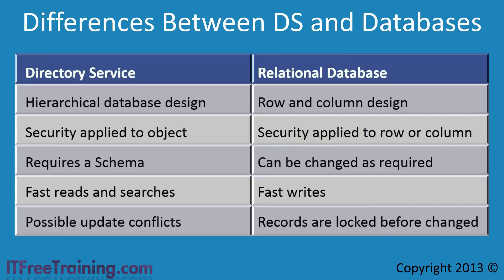The next difference is that a directory service is based on a schema. If you want to add additional object types to the directory service, you need to make changes to the schema. A database does not require a schema, so changes to a database can be removed later. Changes to the schema of a directory service, on the other hand, cannot be deleted later on if they are no longer required.